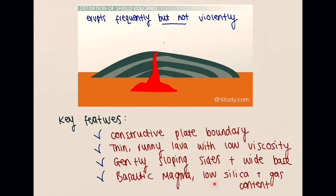It also has a low gas content. Gases are very important with regards to eruptions, as a high gas content tends to produce very explosive eruptions. This shield volcano has a low gas content, so the eruptions are not very explosive. All of this combines to produce a volcano whose eruptions tend not to be very violent, but it does erupt more frequently, because the runny magma tends not to cause any blockages within the vent itself.